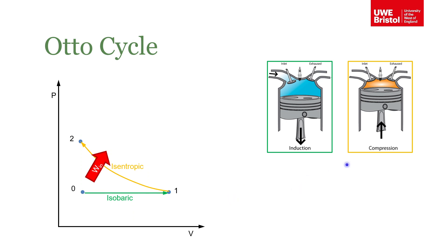When the piston is at the bottom, the inlet valve closes and the piston moves up and compresses the gas. We're now going from state one to state two. We're compressing the gas, so we're doing work on the gas — adding work into our cycle. This is considered to be an isentropic process. So we've inducted some air, closed the valves, and compressed it up to state two.